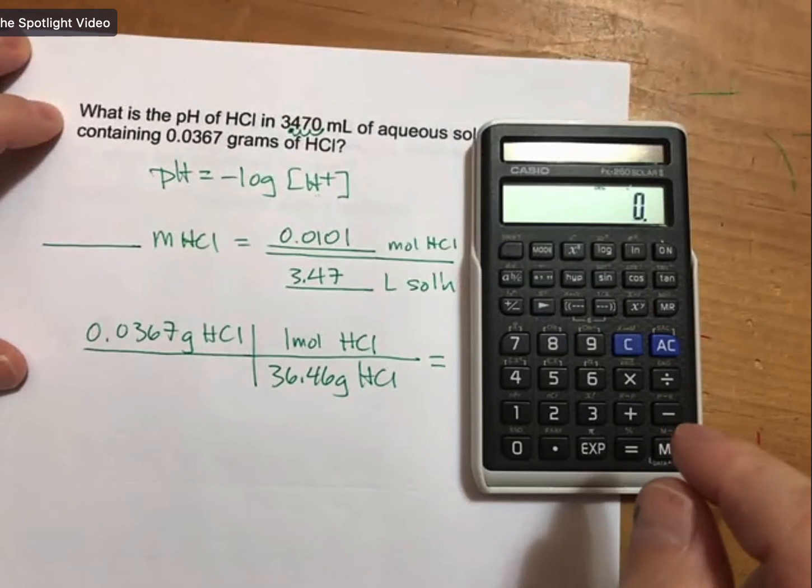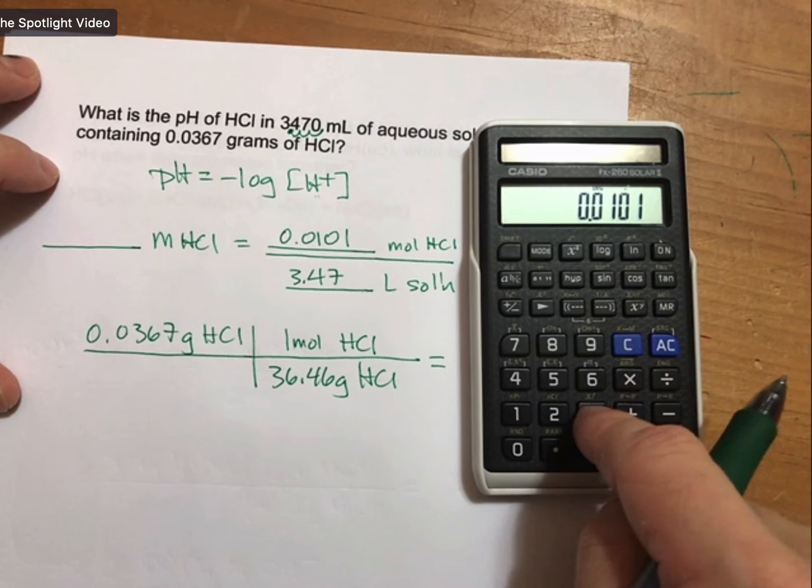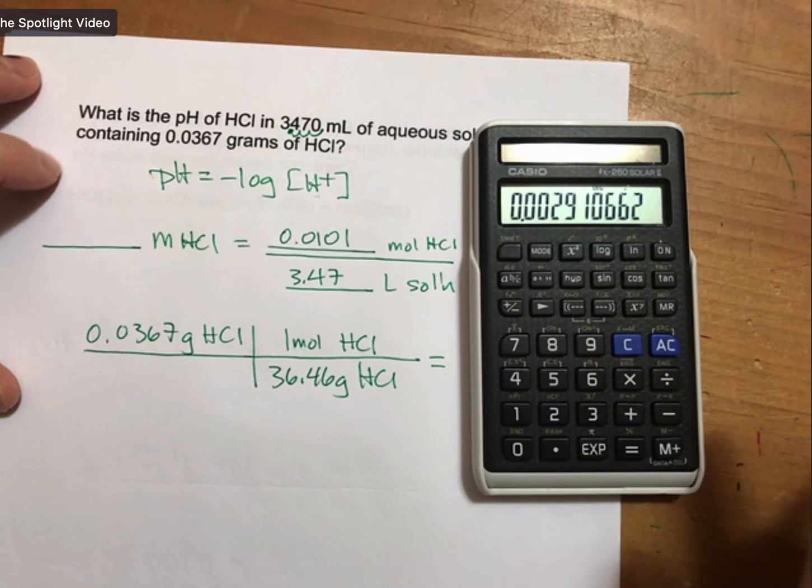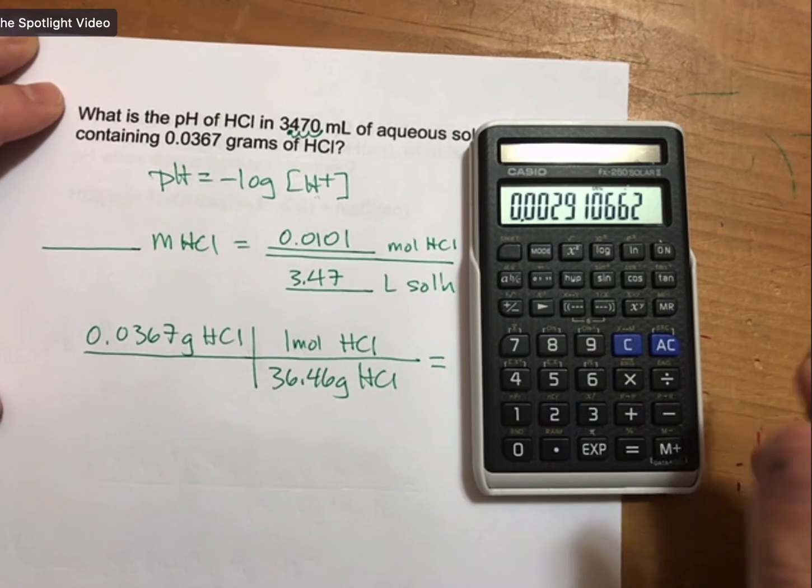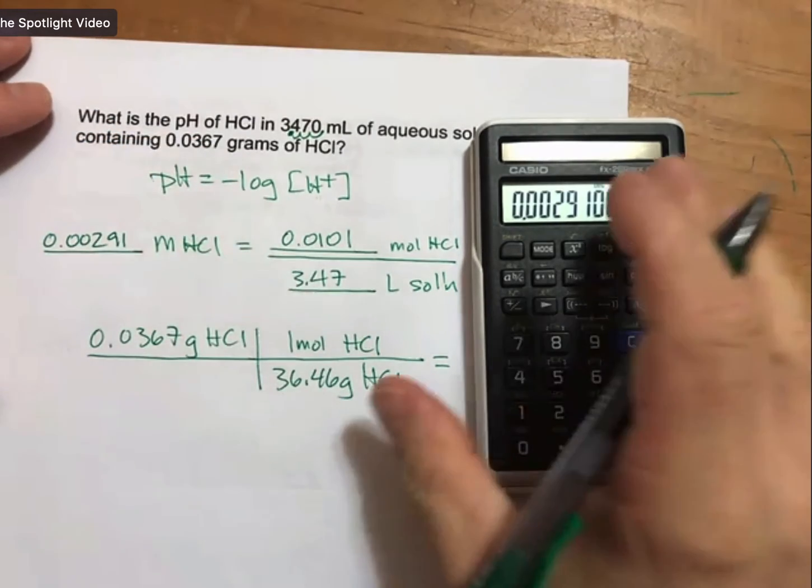And then 0.0101 divided by 3.47, 0.00291 molarity of HCl.